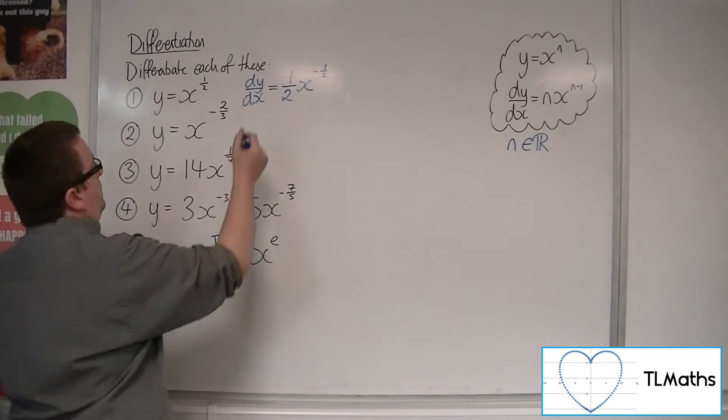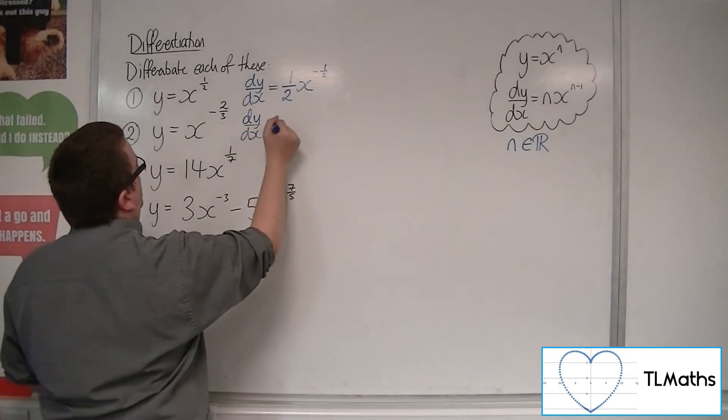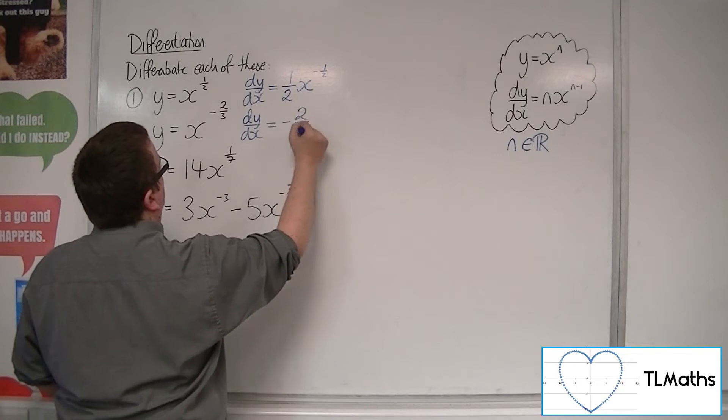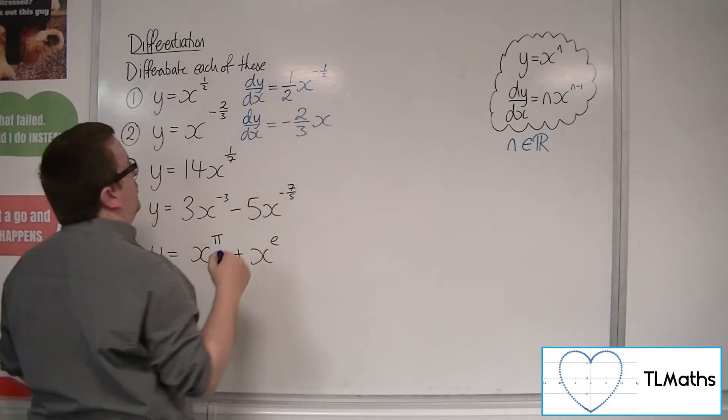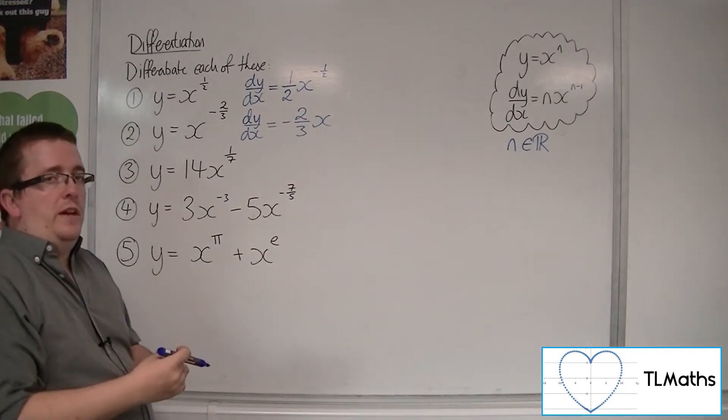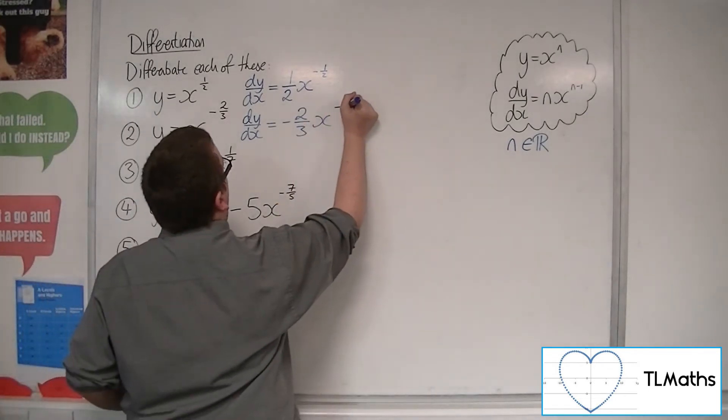For number 2, the minus 2 thirds will come down to the front, and then we need to take 1 off the power. So minus 2 thirds take away 1 is minus 5 thirds.